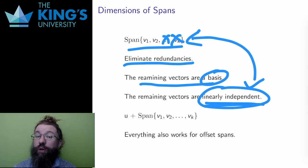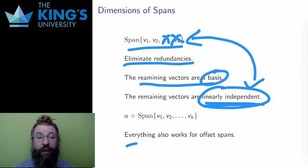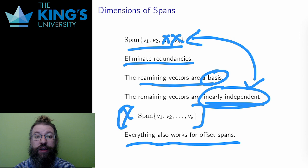Finally, all of this works for an offset span as well by simply ignoring the offset. The offset doesn't change dimension at all, doesn't change basis, doesn't change linear independence of the vectors. It's just a shift, moving the span some distance in some direction. Nothing about the algorithm changes for an offset span, and the offset itself is never part of the matrix or the row reduction.